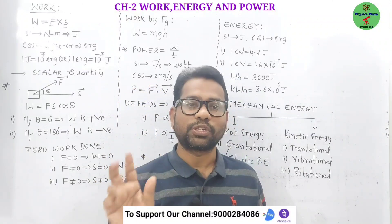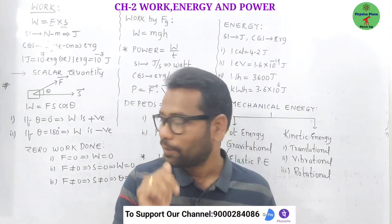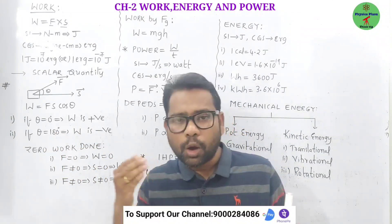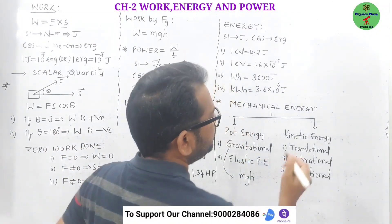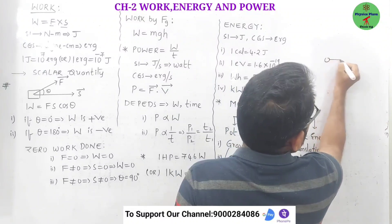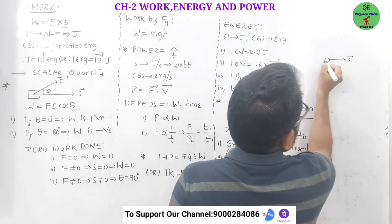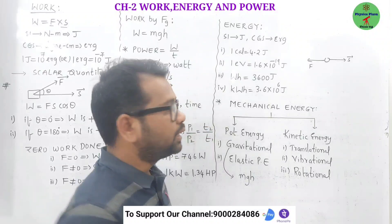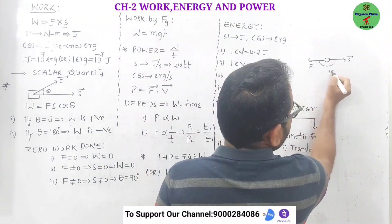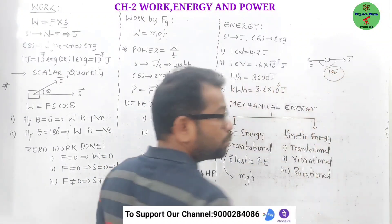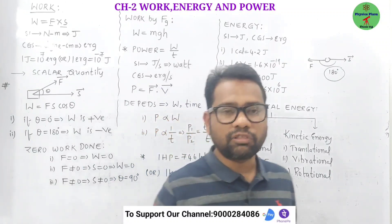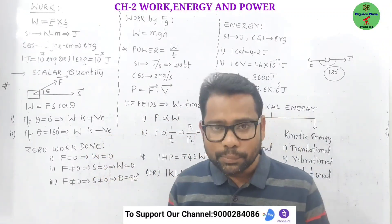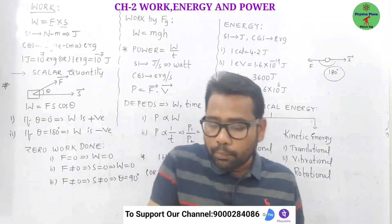Negative work done: if a body is displaced opposite to the direction of applied force — for example, force acting in one direction and body moving in the opposite direction — the angle between them is 180 degrees. Cos 180° = −1, so W = Fs × (−1) = −Fs. Work done is negative.